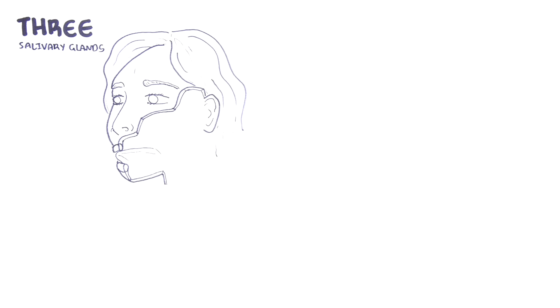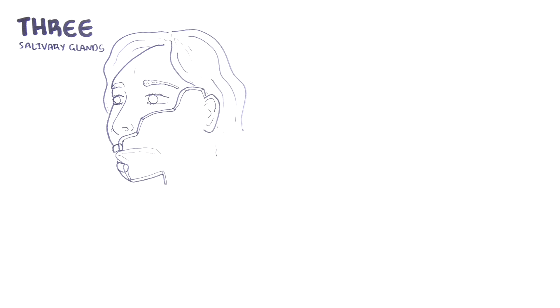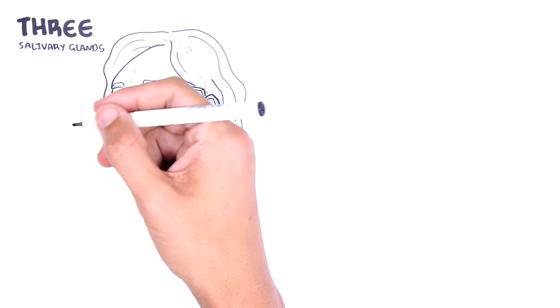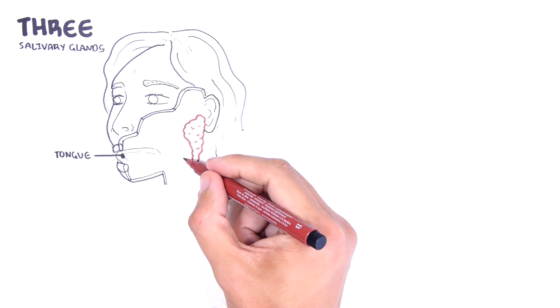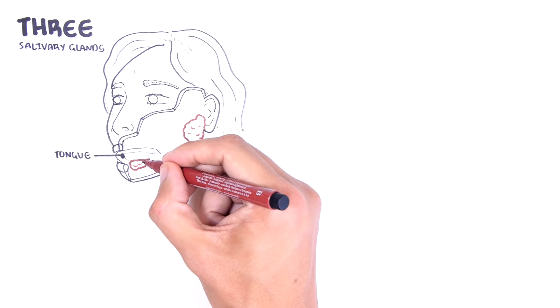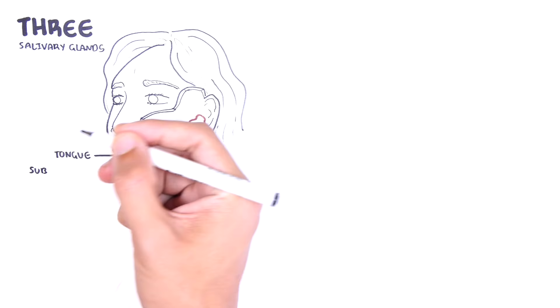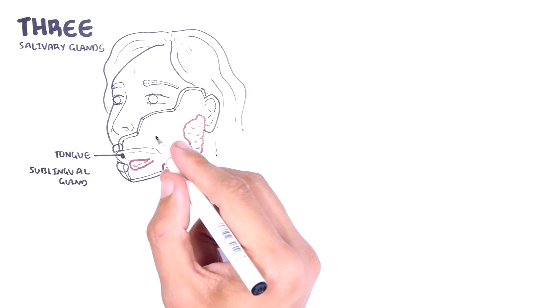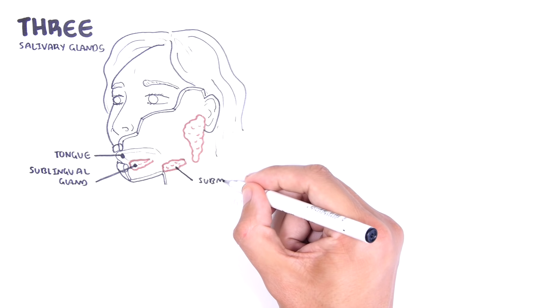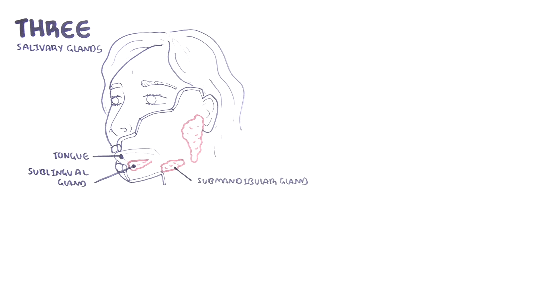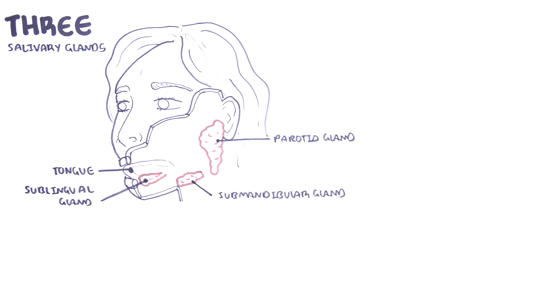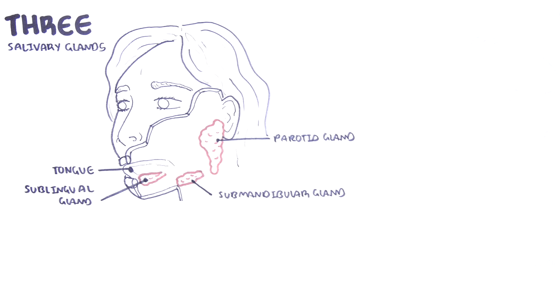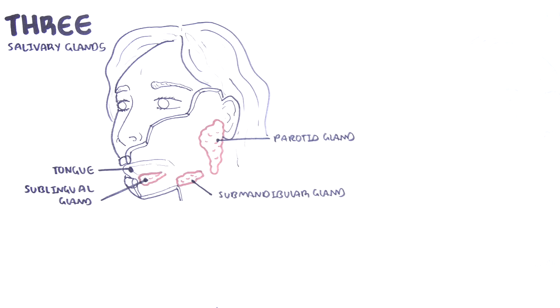The salivary glands produce saliva which enters into the oral cavity where the tongue is. Sitting below the tongue you have the two sublingual salivary glands. Under the mandible, your lower jaw, to the back of the mouth you have the two submandibular salivary glands, and then you have the bilateral parotid glands which is the largest salivary gland sitting posterior to the masseter muscle and anterior to the sternocleidomastoid muscle.